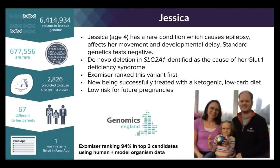Here's a patient from Genomics England named Jessica. She has over 6 million variants in her genome, with 677,000 being rare, 2,800 predicted to cause a protein change, and 67 different from her parents. Her condition involved epilepsy affecting movement and developmental delay, with all standard tests negative. Using this approach, the SLC2A1 gene was identified as the cause of her GLUT1 deficiency syndrome — Exomiser ranked this variant first. This condition can be fully treated with a ketogenic low-carb diet and poses low risk for future pregnancies.